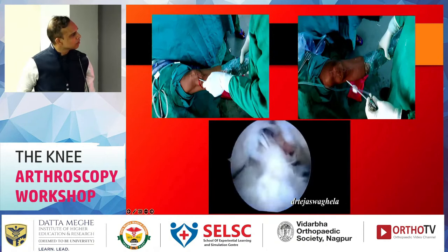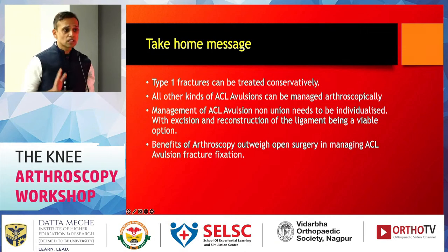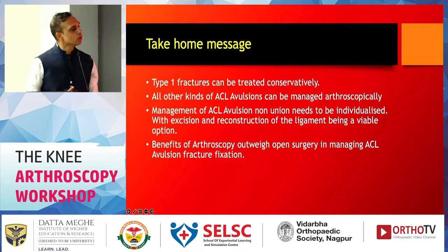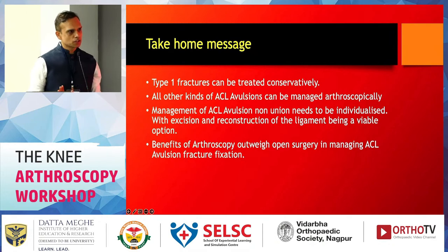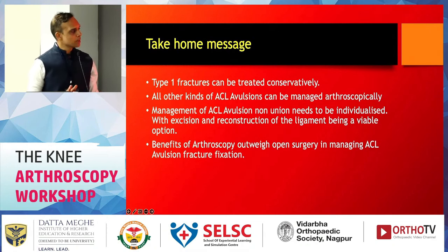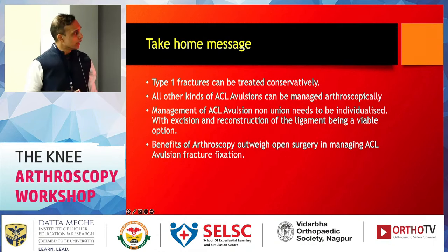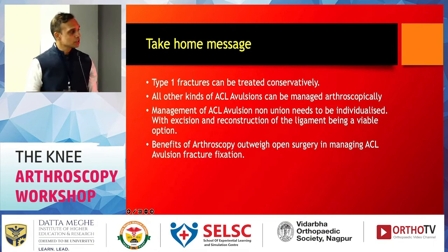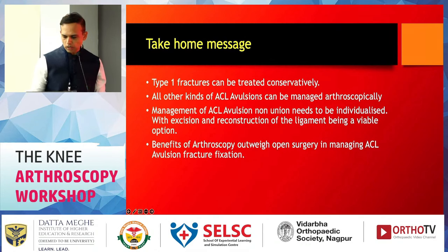Just to summarize: Type 1 fractures still have a role for conservative management. I treat Type 1 ACL avulsions with a plaster in full extension — it should be an above-knee cast, not a cylindrical cast. Give that, take repeat X-rays at three weeks, ensure there's no beaking, and the patients will do well. All others can be managed arthroscopically. You need good visualization, good skills of suture shuttling, and of course the benefits of arthroscopy outweigh open surgery.